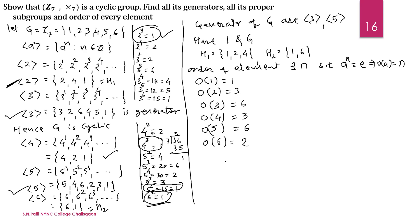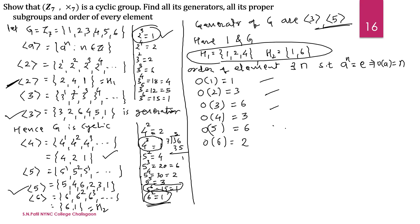In this way we have shown that Z7 is a cyclic group, found all generators, found its proper subgroups, and found the order of every element. Thank you for watching.